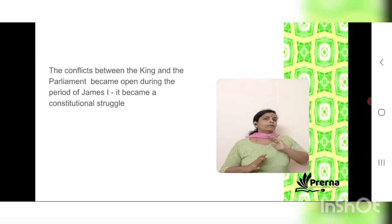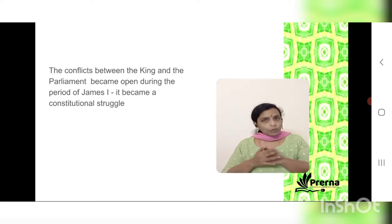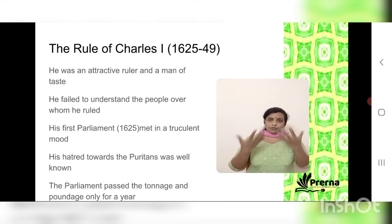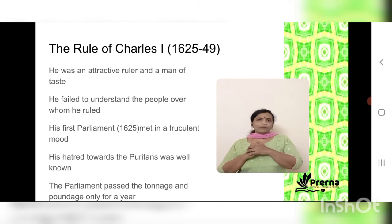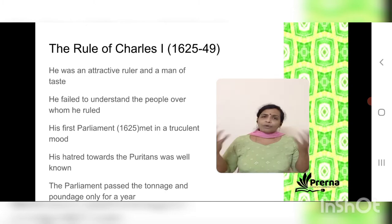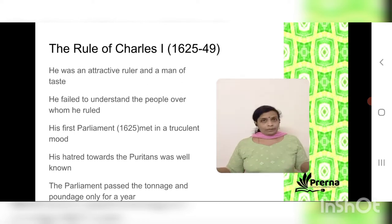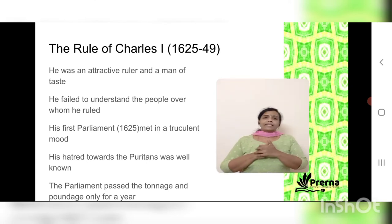James I was succeeded by his son Charles I, whose period was 1625 to 1649. It was this ruler who participated in the civil war and was finally beheaded. Charles I was like his father — very much a believer in the divine right theory — but he was also an attractive person of taste. He loved ceremonies, had an aesthetic sense, and was an artist who enjoyed beautiful things.